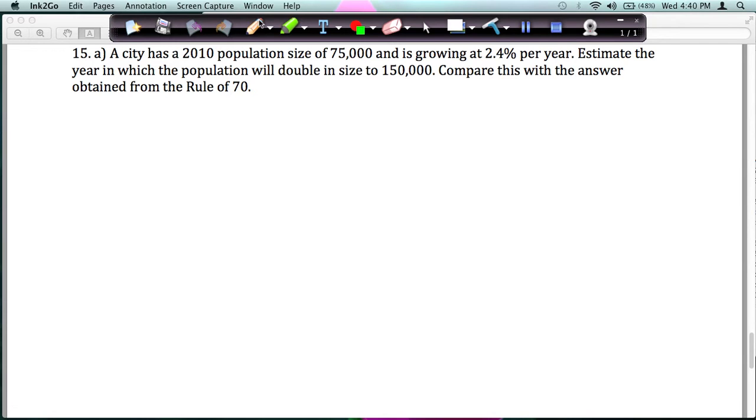Let's look at 15A. A city has a 2010 population size of 75,000 and is growing at 2.4% per year. Estimate the year in which the population will double in size to 150,000. Compare this with the answer obtained from the rule of 70.